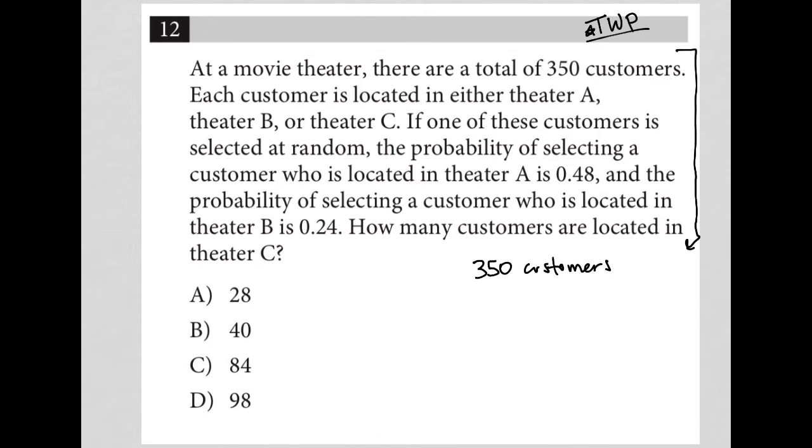The next sentence says each customer is located in either theater A, theater B, or theater C. Okay, so those 350 are split up into A, B, and C.